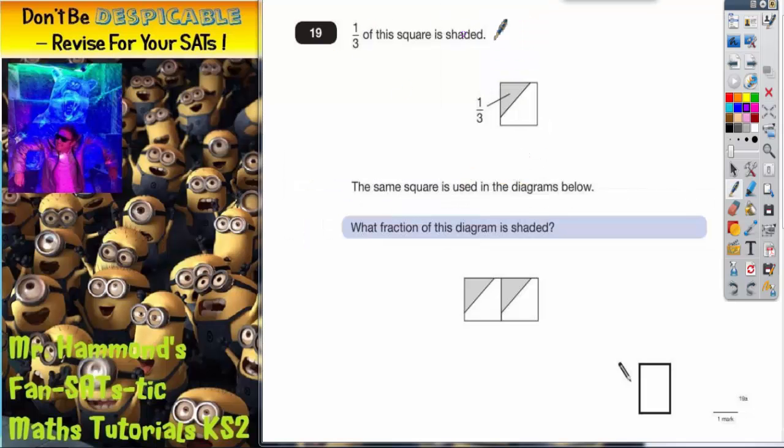Question 19 says one third of this square is shaded. So one out of three, in other words, one section out of every three is shaded. But we have to look at equal sections. So we could split the square, perhaps here, and we're trying to get it to equal sections. We can see that one third of that is shaded in.